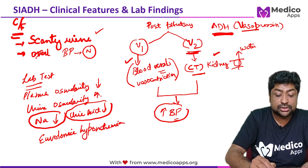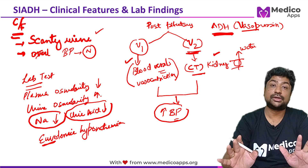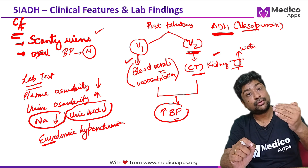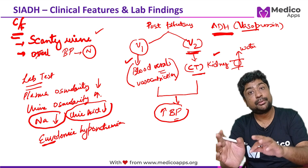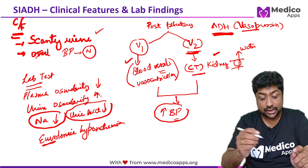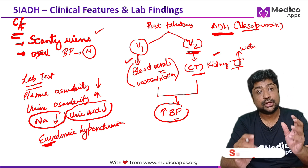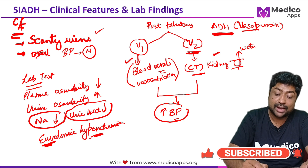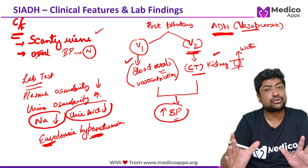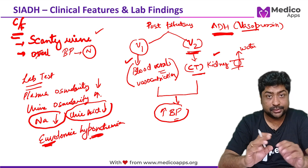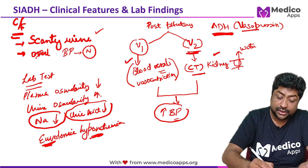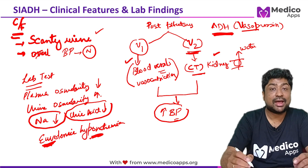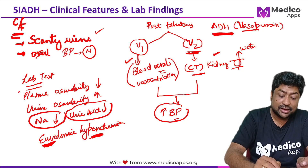Why euvolemic? Because the total amount of sodium is constant. In hypovolemic hyponatremia, the amount of sodium is actually reduced. In hypervolemic hyponatremia, the amount of sodium is increased. But here it is euvolemic hyponatremia, which means the total sodium content of the body remains the same, but still because of water retention you have hyponatremia. There is a separate class on hyponatremia you can refer to for all the different types.